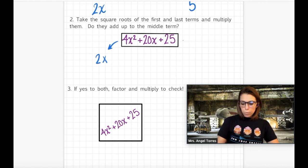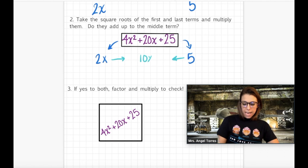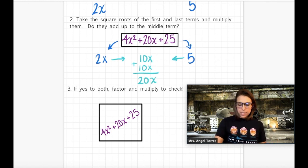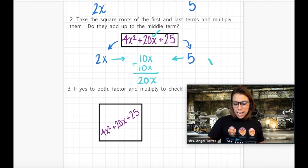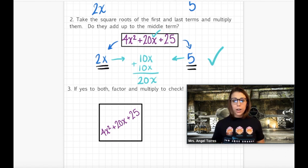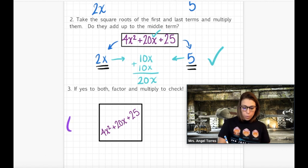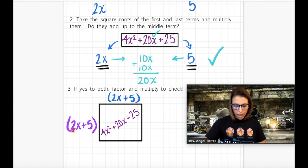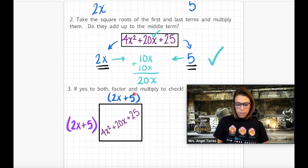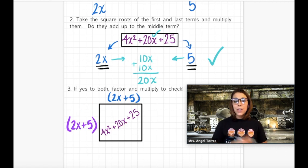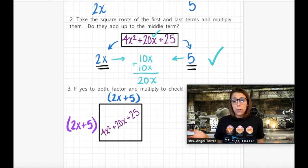Checklist number two: we take those two square roots, 2x and 5, and multiply them together, because that's what happens when you multiply binomials. That gives us 10x. Does 10x plus 10x equal the middle term 20x? Yes it does, which means this is a perfect square. To factor it, I grab my square roots and put them into two binomials: width is 2x plus 5, and length is also 2x plus 5. Quick mental check: 2x times 2x is 4x squared, 5 times 5 is 25, 2x times 5 is 10x, and 5 times 2x is also 10x — together giving us 20x. So we've factored this in essentially one step just because we noticed it was a perfect square.